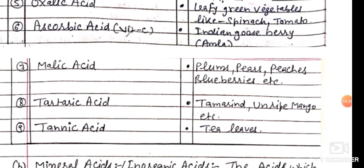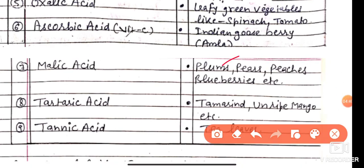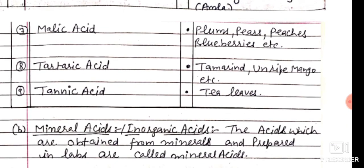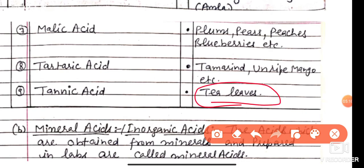Next is Malic acid, found in apples, pears, peach, and blueberries. Next is Tartaric acid, found in tamarind and unripe mango. Next is Tannic acid, found in tea leaves.